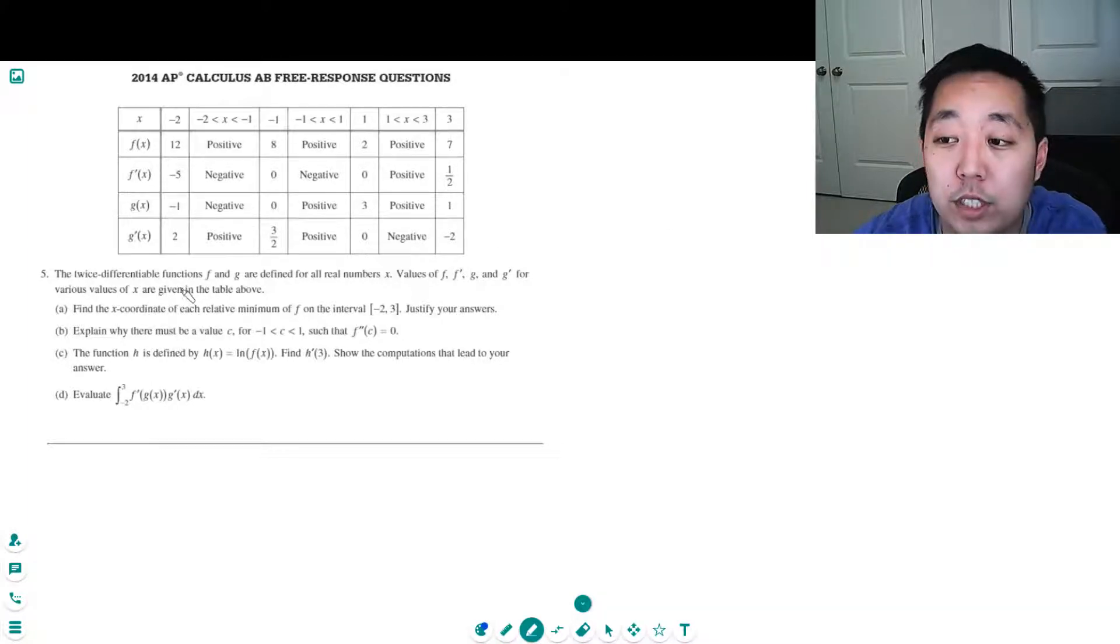The twice differentiable functions f and g are defined for all real numbers x. Values of f, f prime, g, and g prime for various values of x are given in the table above. Find the x coordinate of each relative minimum of f on the interval and justify your answers.